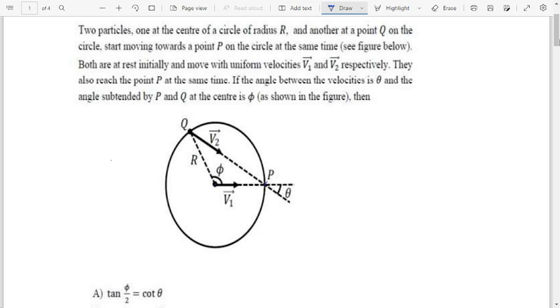So we have to find relation between phi and theta. Actually this question is very very straightforward, it's a maths question rather not physics. So you can see if this angle is theta, so this angle will also be theta. And since you can say this is radius, so this is also radius, this will also be theta.